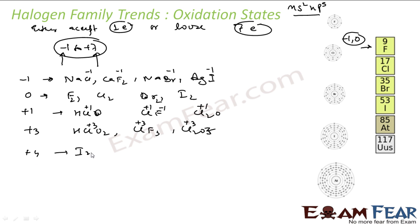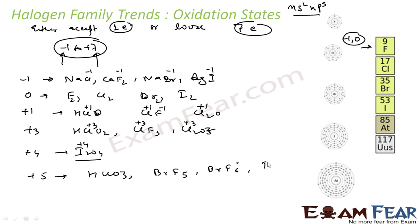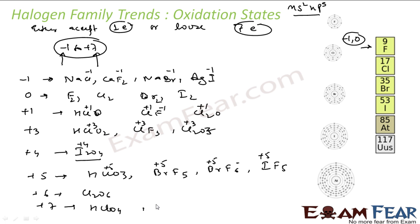Plus 4 exists but is rare — I2O4 is one example where iodine has plus 4 oxidation state. For plus 5, we have HClO3, BrF5, BrF6 minus, and IF5 — in all these the oxidation state is plus 5. Plus 6 also exists but is little rare. For plus 7, examples are HClO4, BrF6 with a plus charge, and IF7 is a good example of plus 7 oxidation state.